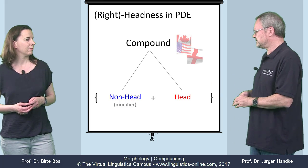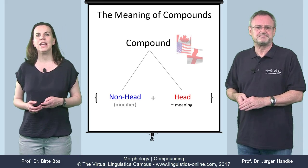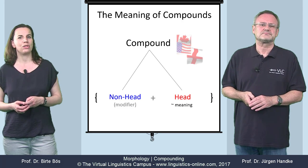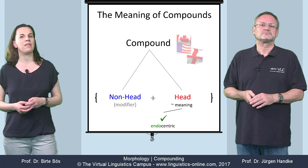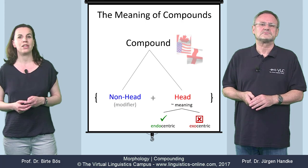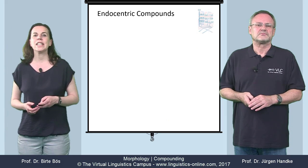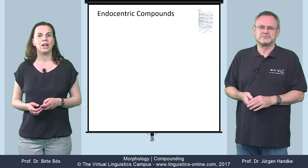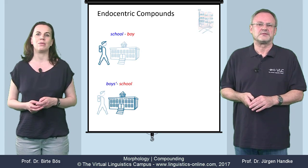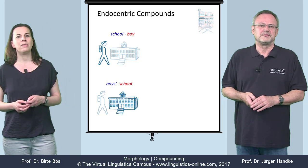But what about their meaning? In classifying compounds concerning their meaning, the central question is: does the grammatical head define the meaning or not? If the answer is yes, we have an endocentric compound. If it's no, we have an exocentric compound. Let's look at endocentric compounds first, where the grammatical head defines its meaning. A schoolboy is a kind of boy; a boys' school is a kind of school. So we can construct hyponymy relationships of this kind.